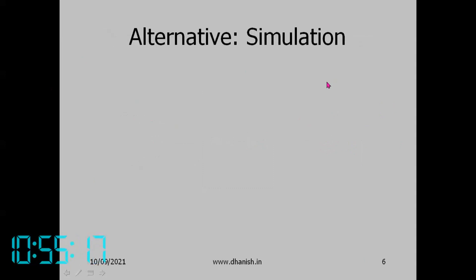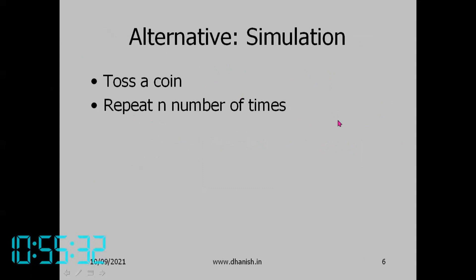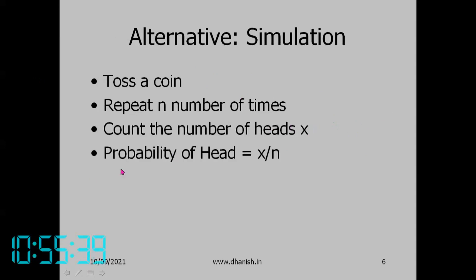The idea of simulation: for example, to toss a coin, you repeat N number of times, count the number of heads X. The probability of a head can be calculated from the experimental results — not based on theory — as X divided by N. This is simulation.